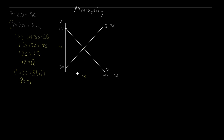Before we carry on to the monopolist, let's take a look at consumer and producer surplus. Consumer surplus is below demand, above the price paid, out to the quantity exchanged of 12. That gives us a triangle: one-half base of 12 times a height of 150 minus 90, which is 60. So we get a consumer surplus of 360.